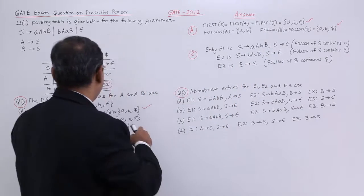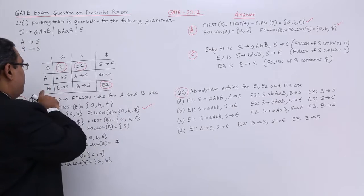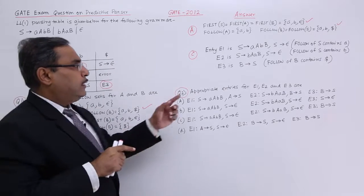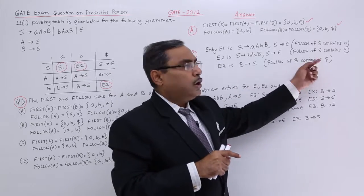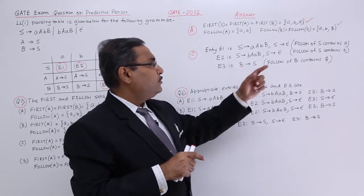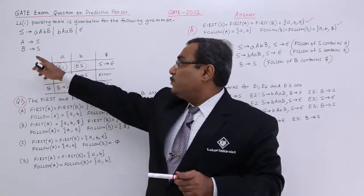And E3, E3 means where? E3 means we are having B dollar. That will be coming as B produces S. Follow of B contains dollar. That is why B produces S will be coming. That is this production rule will be coming.